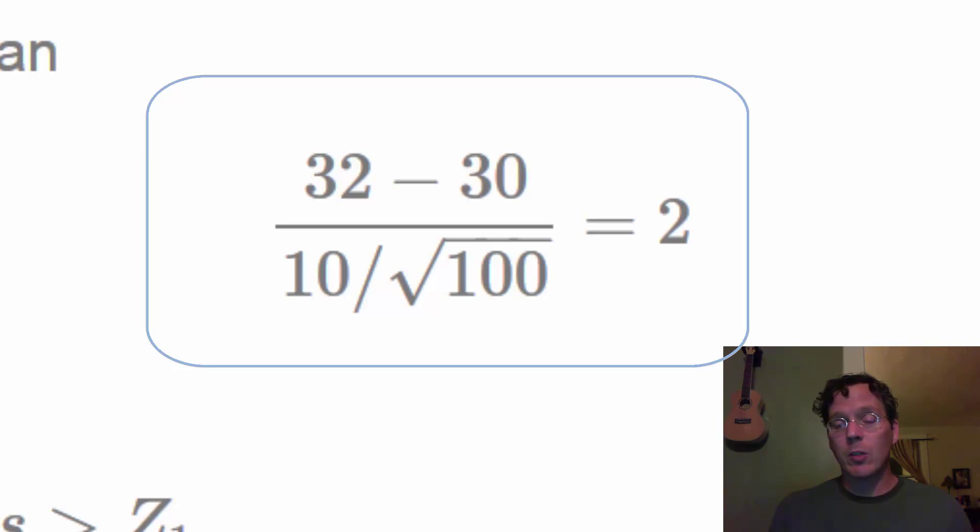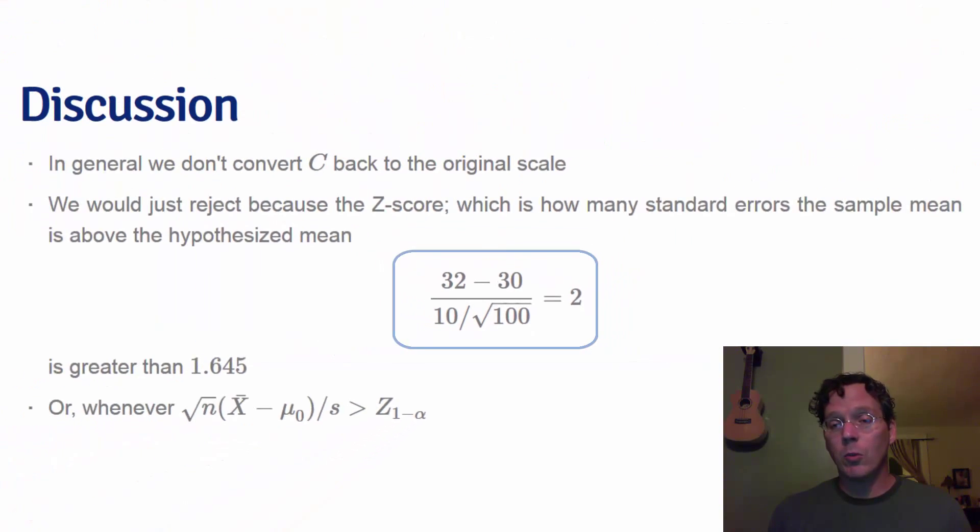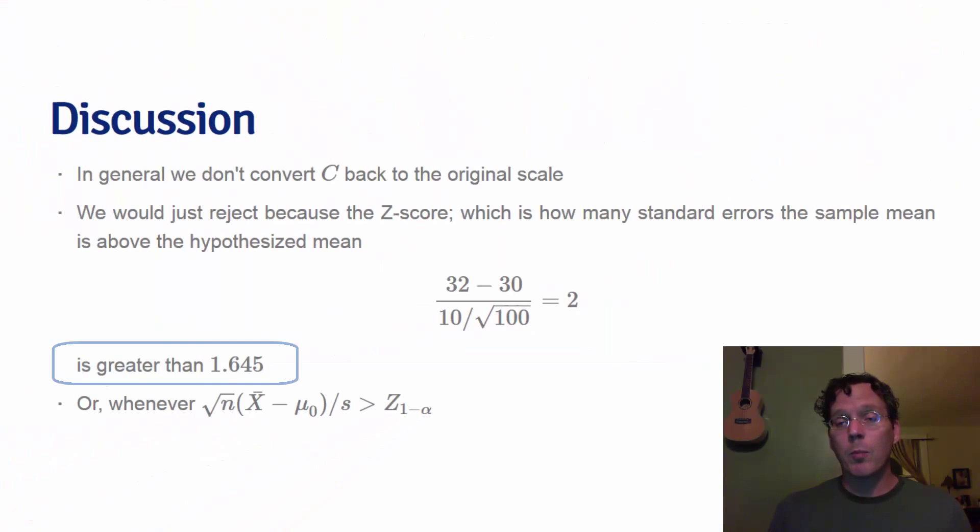And our standard error is 10 divided by square root 100, where in a real problem, the 10 would be estimated from the data. So it would be the sample standard deviation. This works out to be 2. This is greater than 1.645. The chance of this occurring is less than 5%. So we're going to reject the null hypothesis.